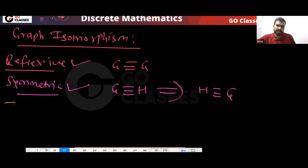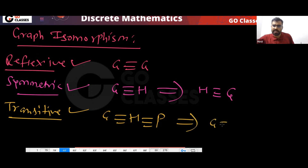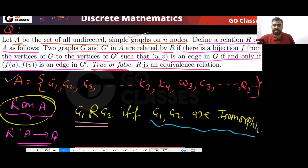And can I say this is transitive? Yes. If G is isomorphic to H, and H is isomorphic to P, then G is isomorphic to P. So graph isomorphism is an equivalence relation.